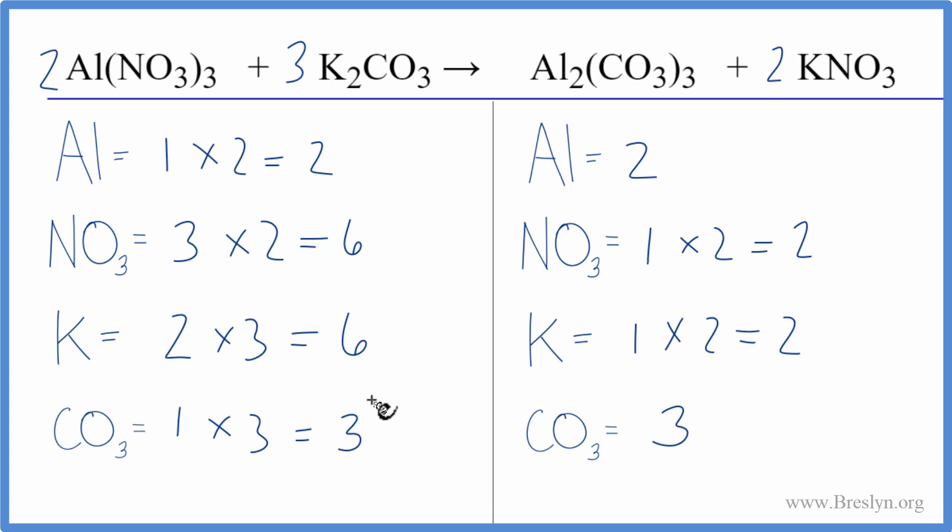Now we have a bit of a problem though, because our nitrates aren't balanced and our potassiums aren't balanced. We could take, and instead of a two here, we could change that to a six and see what happens. Let's do that. Put our six here. And now we need to update the nitrates and the potassiums. So we have one times six. We have six potassiums and then the one times the six. Now we have six nitrates.